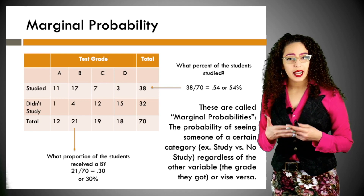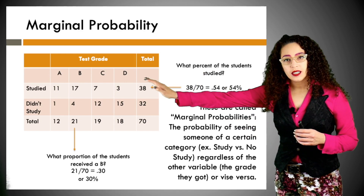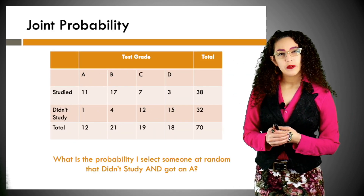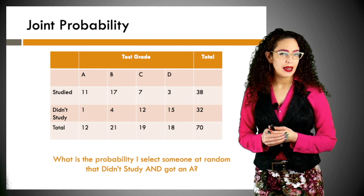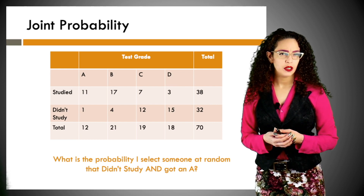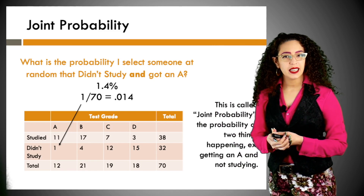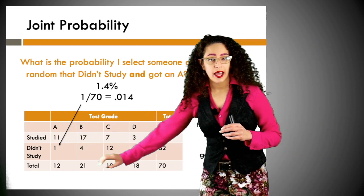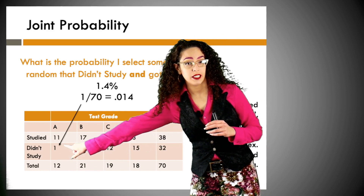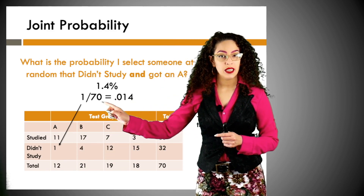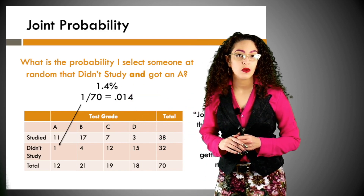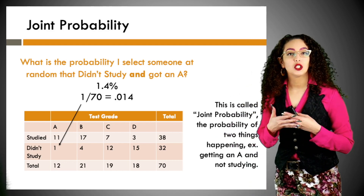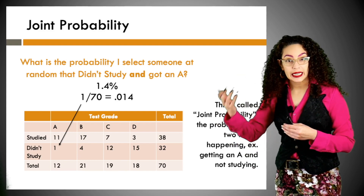Marginal probability is the probability of seeing someone in a certain category regardless of the other variable — we're out in the margins. Now a different question: what is the probability I select someone at random who did not study and got an A? We find the cell satisfying both conditions — one person meets that criteria — and divide by the total of 70, giving 0.014, or about 1.4 percent. This is called joint probability: the probability of two things both happening, like getting an A and not studying.